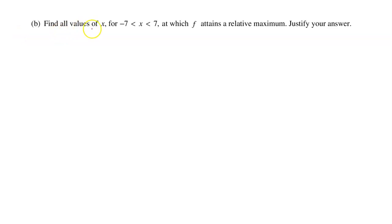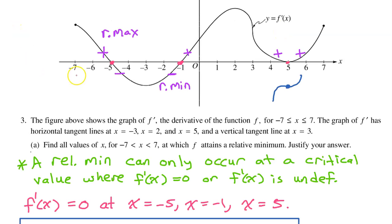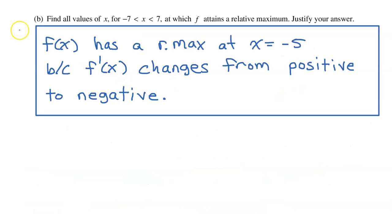Part B: Find all values of x between negative 7 and positive 7 at which f attains a relative maximum. Justify your answer. We already determined this while working on Part A. f of x has a relative max at x equals negative 5 because f prime changes from positive to negative — that is the first derivative test.